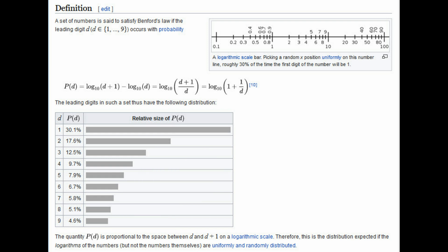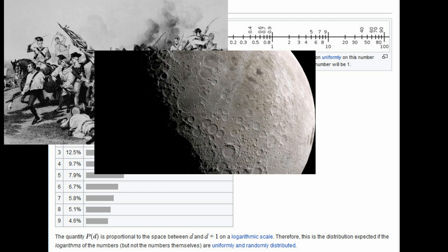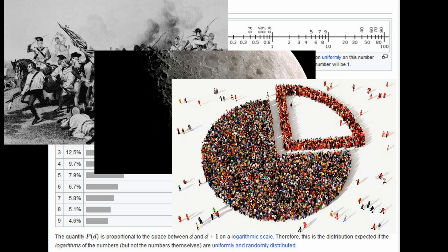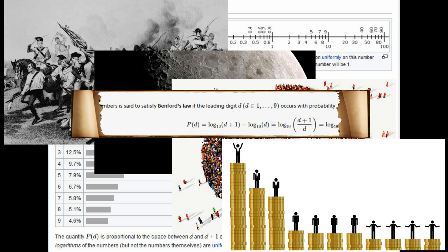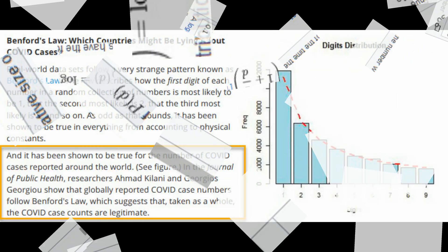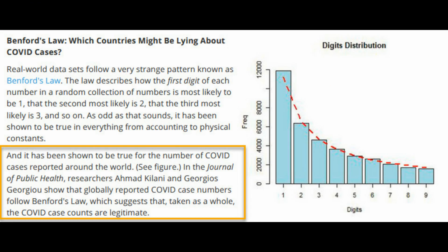So Benford applied this observation to a wide range of areas such as war casualties, size of craters on the moon, population data, income distributions, and he found that a lot of these data sets actually adhere to this law. In fact, it has been shown that even COVID cases around the world also follow Benford's law.